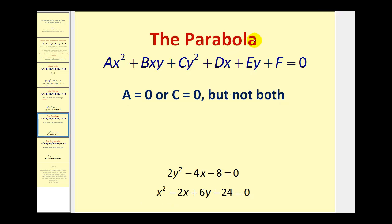For a parabola, we must have A equals zero or C equals zero, but not both equal to zero. So what that means is either there's no x squared term or there's no y squared term, but there must be one of them.